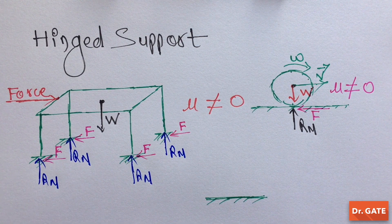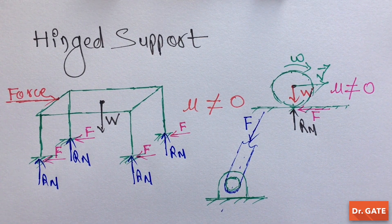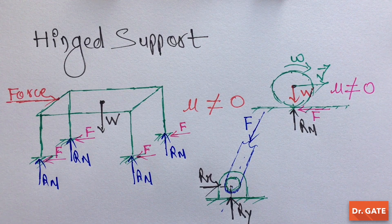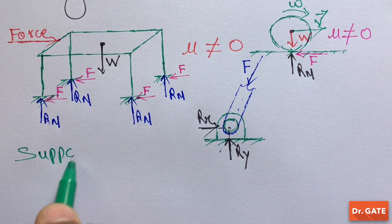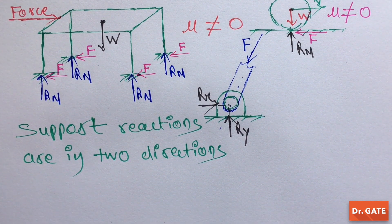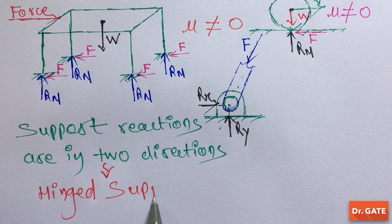Let's take a typical hinge, and we are applying a force on it. Then the reaction force will be exerted. Here you can see that in these diagrams, the support reactions are in two directions. So whenever a support can exert reactions in two directions, then that support is known as hinge support.